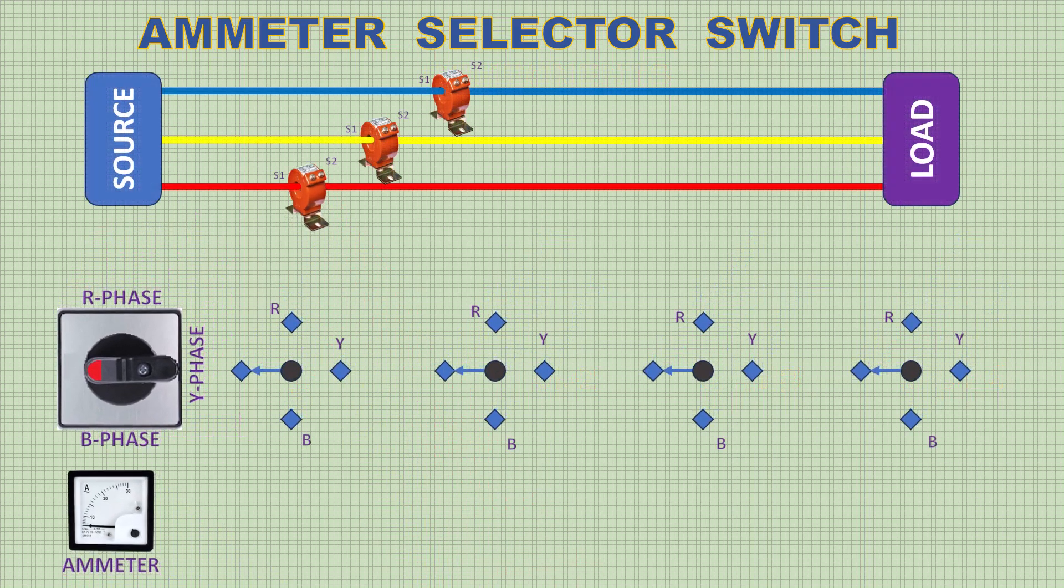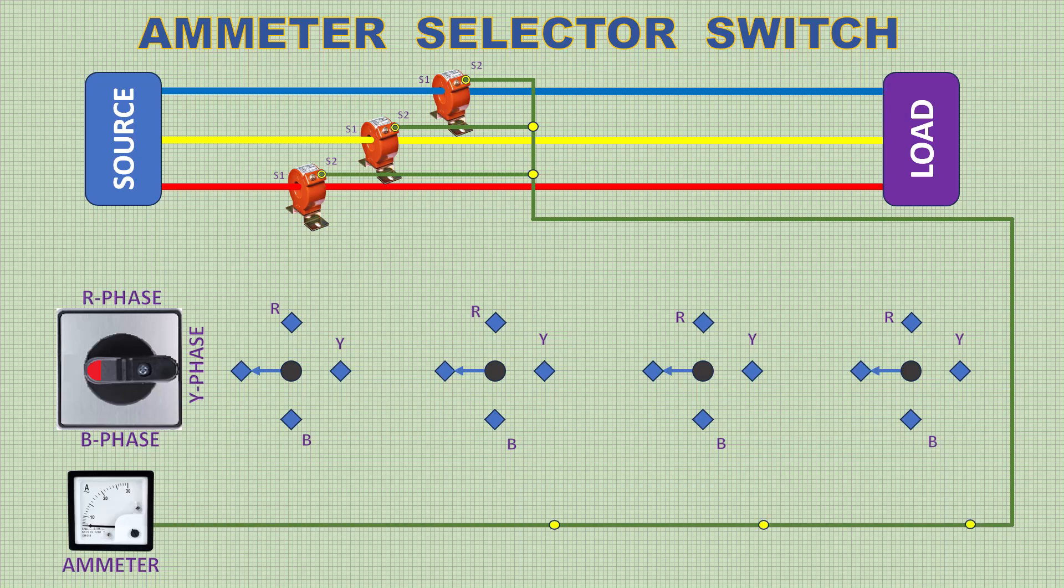Now let's do the connection one by one. First connect all the CTS2 terminals, then connect it to the Selector Switch ground terminal.